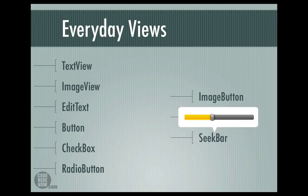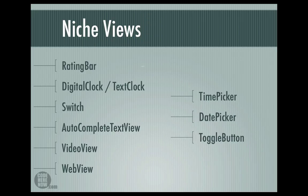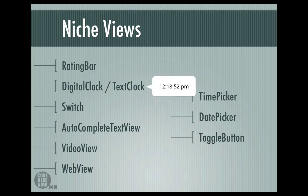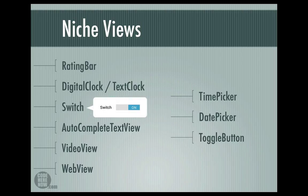There are also views that are specific to the Android platform. The rating bar allows you to choose a rating. There is something called a digital clock that displays the current system time to the user. The text clock is the most recent version of a digital clock — it is similar to the digital clock. The switch is just like a checkbox; it has two states, on and off. You can put a text that says for instance 'lights' and the switch could read on or off depending upon its state.